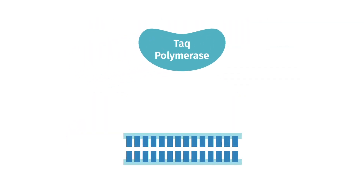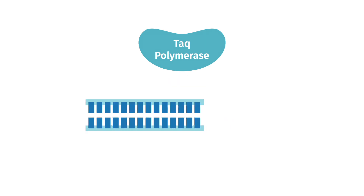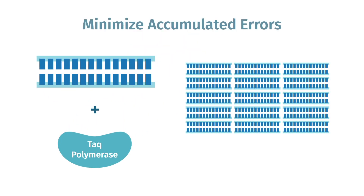The percentage of amplified fragments that contain a mutation is determined by the error rate of the PCR enzyme, the length of the fragment, and the number of amplification cycles. To minimize accumulated PCR errors, choose an enzyme with a low mutation rate and keep your rounds of amplification to 30 or less.